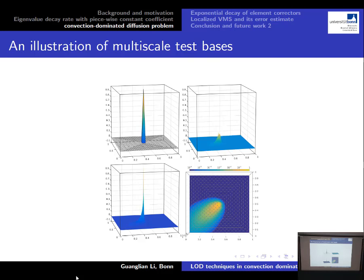Here is an illustration of the multi-scale test basis. The mesh shown is the coarse mesh, with a nodal basis at position (0.5, 0.5). We apply the global corrector to calculate the corrector for this nodal basis, then subtract it to get the multi-scale test basis. Shown in a logarithmic color map, we can see that the decay of this multi-scale test basis is exponential outside the local region. The velocity in this simulation is in the (1,1) direction, so the support of this multi-scale test basis is concentrated in the opposite direction of the velocity.